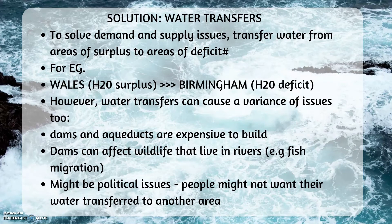Solution: water transfers. To solve demand and supply issues, transfer water from areas of surplus to areas of deficit. For example, from Wales, an area of water surplus, to Birmingham, an area of water deficit.